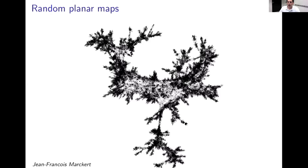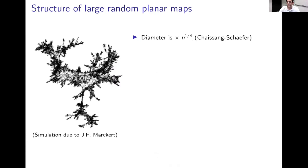Let me tell you about some basic results about large uniformly random quadrangulations. If we view our quadrangulation as a metric space — the planar map together with its graph metric — it's possible to calculate what the typical graph-distance diameter is going to be. This is a result due to Chassaing and Schaefer from the early 2000s, and it turns out to be of order n to the one quarter.